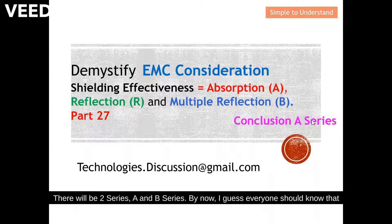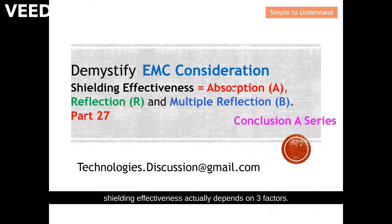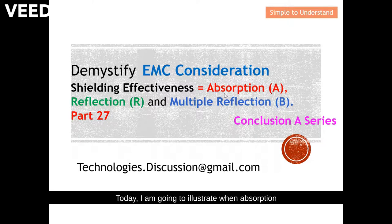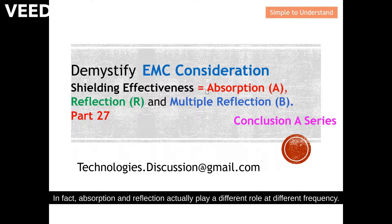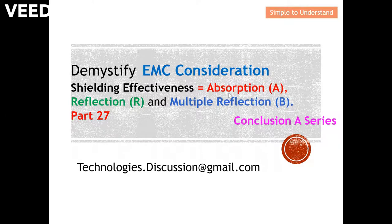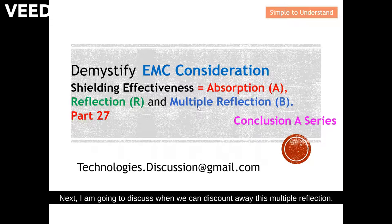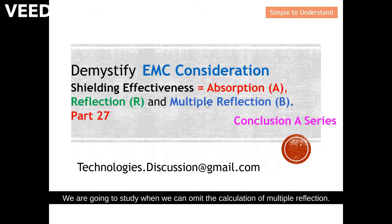There will be two series, A and B series. By now, everyone should know that shielding effectiveness actually depends on three factors: number one, absorption; number two, reflection; and number three, multiple reflection. Today, I'm going to illustrate when absorption will be the dominant factor for shielding effectiveness, and also when reflection will be the dominant factor. In fact, absorption and reflection play a different role at different frequency. We will take a closer look later on. Next, I'm going to discuss when we can discount away this multiple reflection. We know that multiple reflection actually causes a degradation on shielding effectiveness, and we're going to study when we can omit the calculation of multiple reflection.